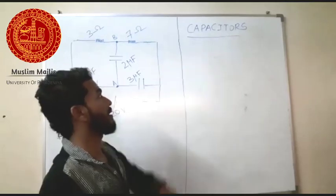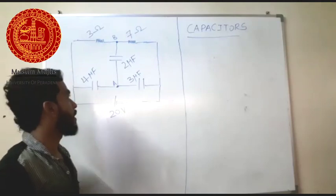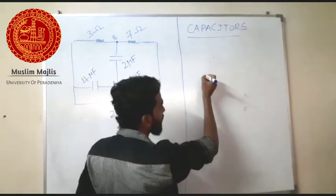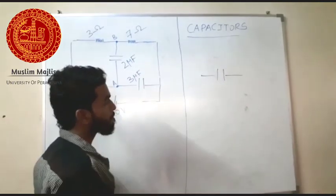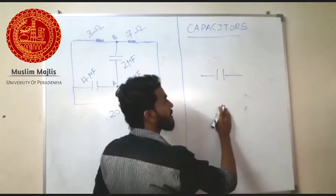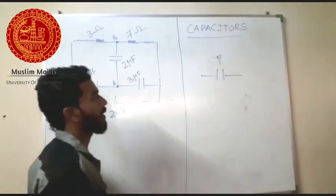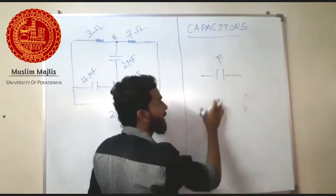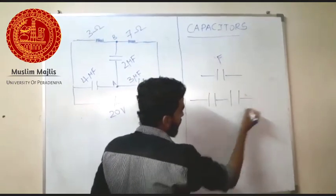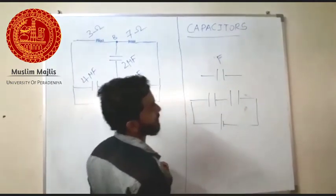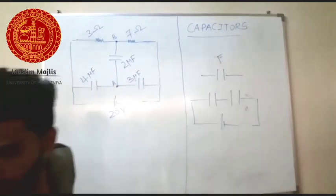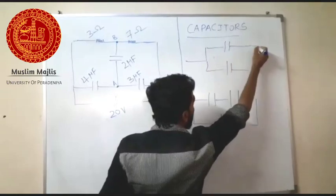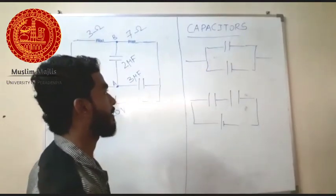Now we can go to capacitors. I have drawn some diagrams here and I'm going to explain capacitors. First of all, we need to know about capacitors — the unit of a capacitor is farad, it might be microfarad or nanofarad. Now we know that in any diagram we can connect capacitors in two ways: the first one is connecting capacitors in series, and the second one is connecting capacitors in parallel.